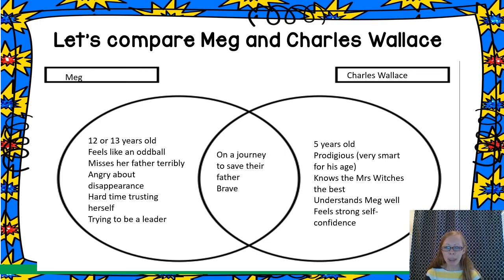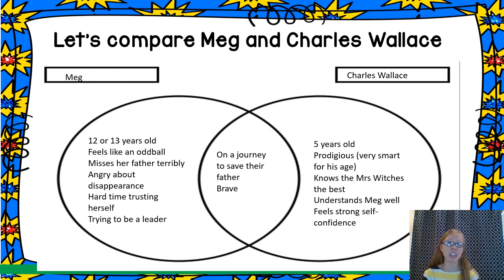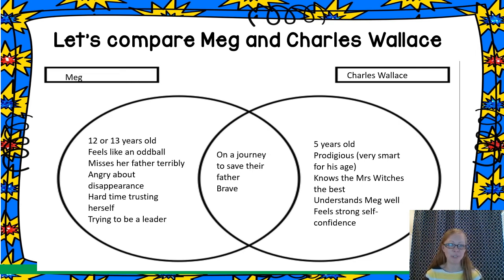As we compare characters, you want to think about the details — not only the basics like what they might look like or their age, but also the things that they do in the book and in the story that help us get to know them a little bit more. That's one way to compare, and there are many other characters we can work on comparing as well. Thanks, fifth grade.